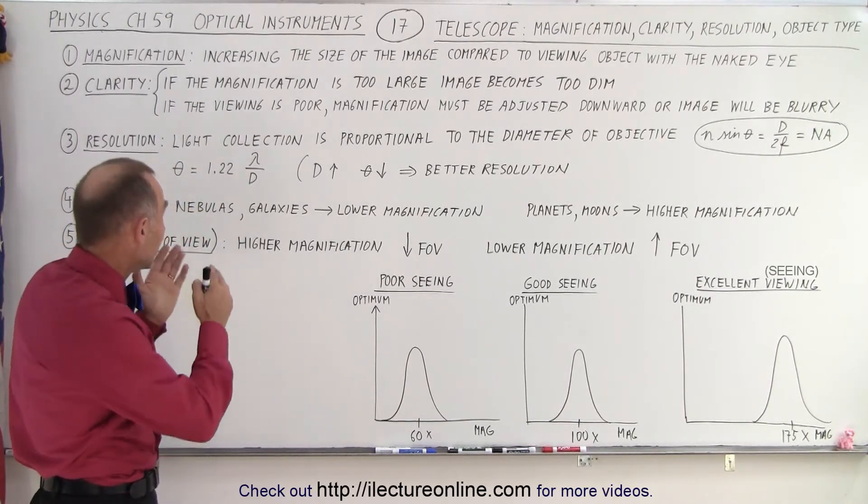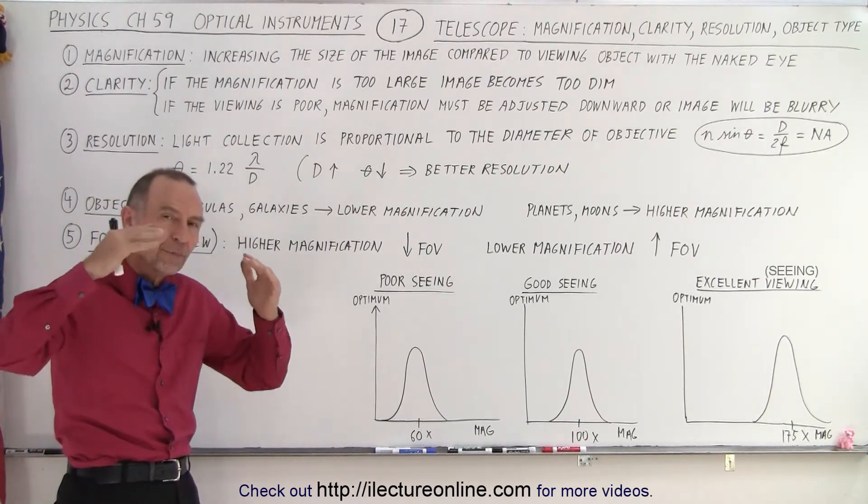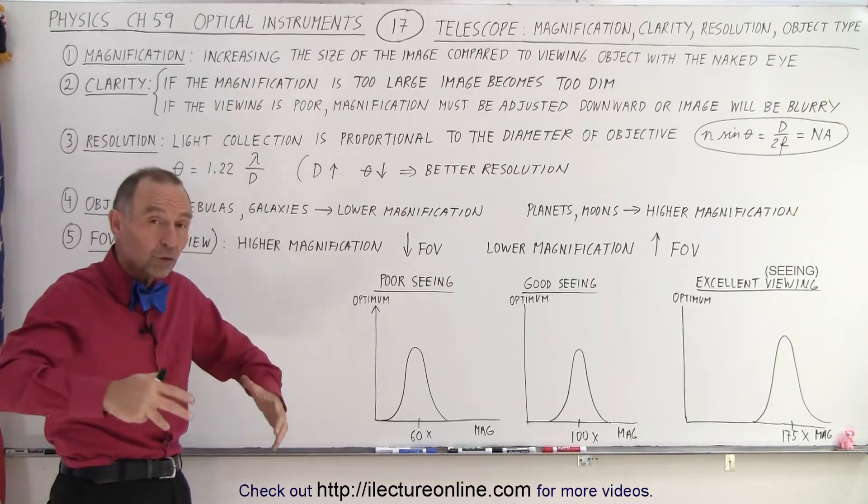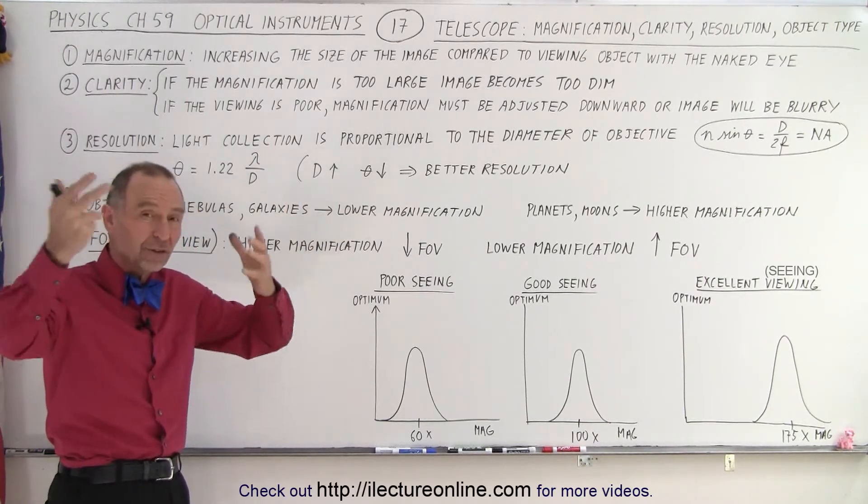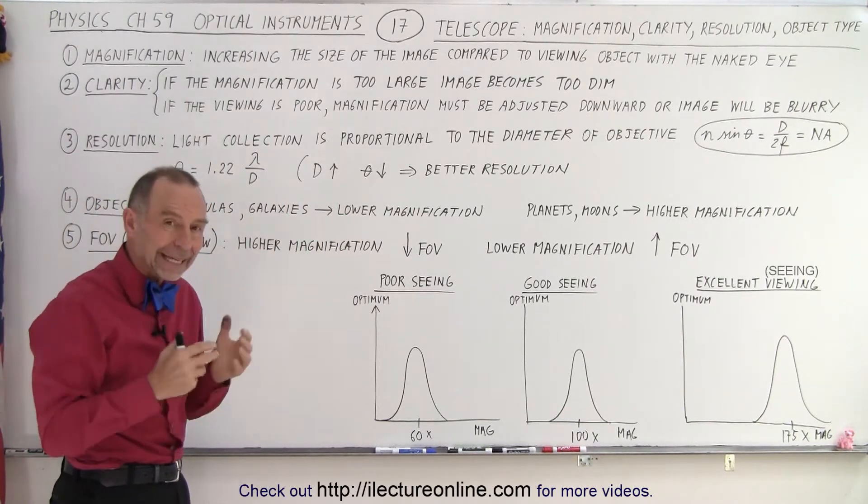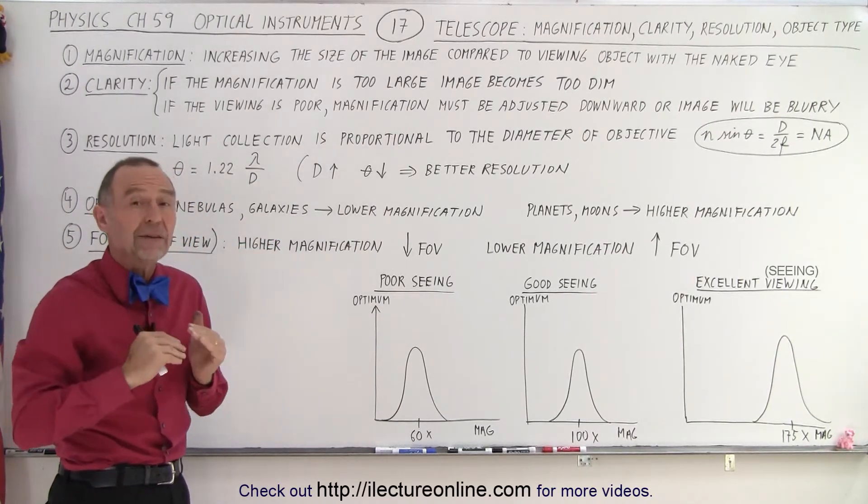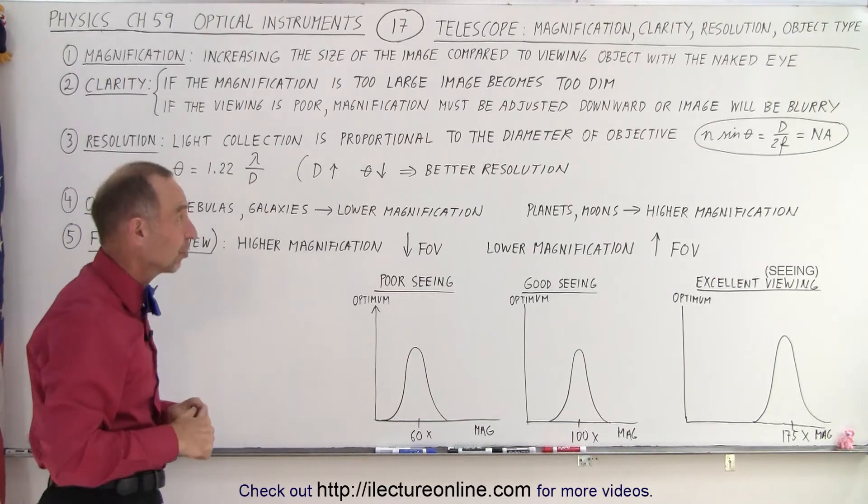So if the viewing is poor, you want to adjust your magnification. You want to make it smaller, because otherwise you're also magnifying the turbulence and the interference of the light in the atmosphere to the point where the image becomes blurred. So you want to control that by lowering the magnification if the viewing conditions are poor.